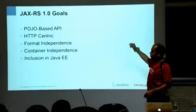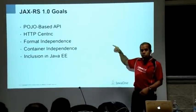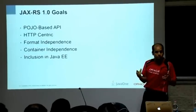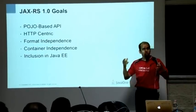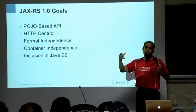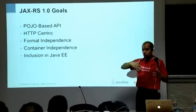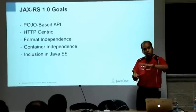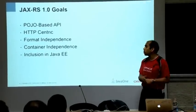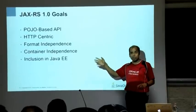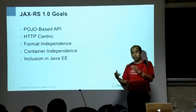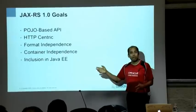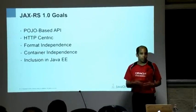Quick summary: it's a POJO-based API focused exclusively on HTTP today. It's format independent — you define what representations are given out, but you don't change your programming model based on the format. It's container independent as well — you can write your JAX-RS application, deploy it in any container, and it's already included in the Java EE platform.